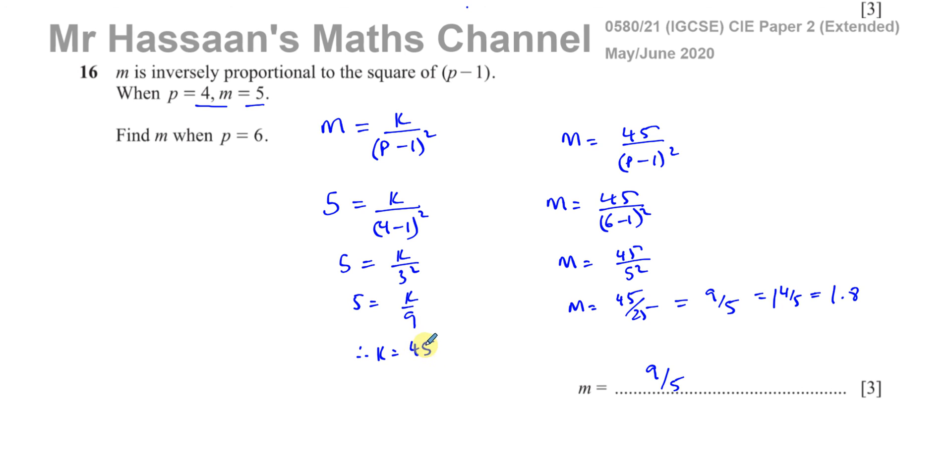And then we find the value of k. How do you find the value of k? Use a pair of values that they gave you. You know both of them. And then once you've got your equation sorted out, you've found what k is, you can then find anything they ask you.